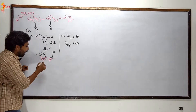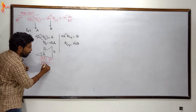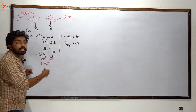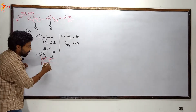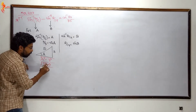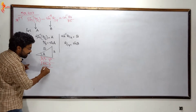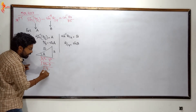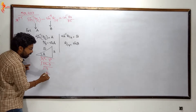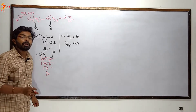Now, 5 squared is 25, minus 3 squared is 9, so the adjacent side squared is 16, and the square root of 25 minus 9 is 4. So this side is 4.